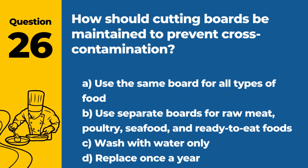Question 26. How should cutting boards be maintained to prevent cross-contamination? a. Use the same board for all types of food. b. Use separate boards for raw meat, poultry, seafood, and ready-to-eat foods. c. Wash with water only. d. Replace once a year. Answer b. Use separate boards for raw meat, poultry, seafood, and ready-to-eat foods. To prevent cross-contamination, use separate cutting boards for raw meat, poultry, seafood, and ready-to-eat foods and sanitize them properly after each use.